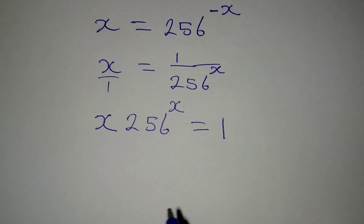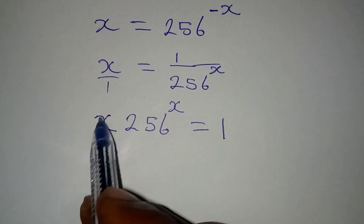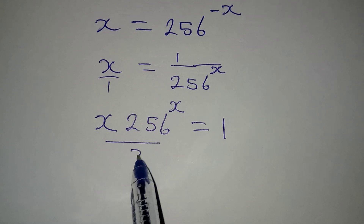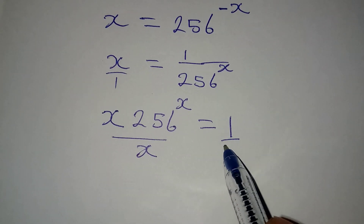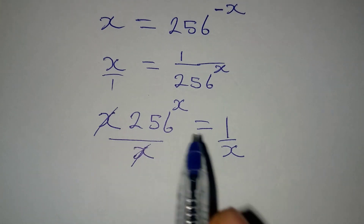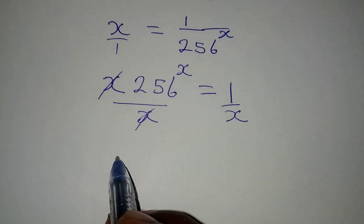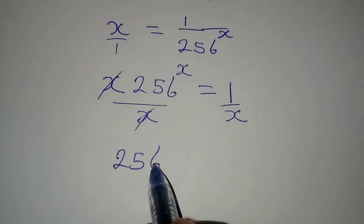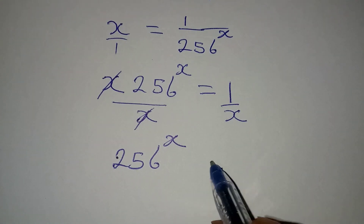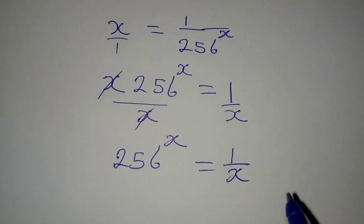Now we remove x from the left side by dividing both sides by x. This cancels, and we are left with 256 to the power of x equal to 1 over x.